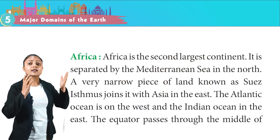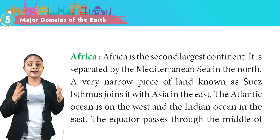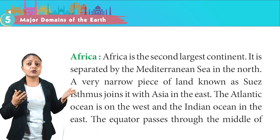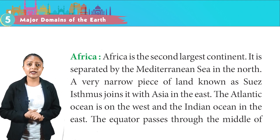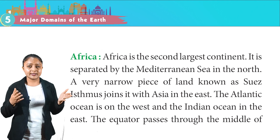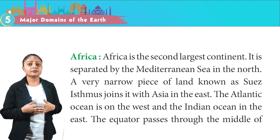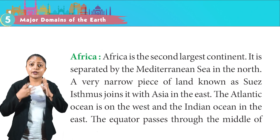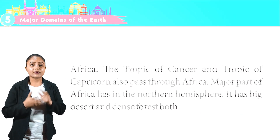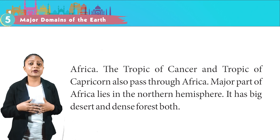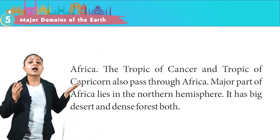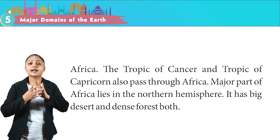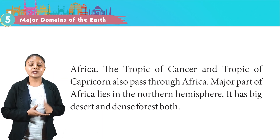Africa is the second largest continent. It is separated by the Mediterranean Sea in the north. A very narrow piece of land known as the Suez Isthmus joins it with Asia in the east. The Atlantic Ocean is on the west and the Indian Ocean is in the east. The equator passes through the middle of Africa. The Tropic of Cancer and Tropic of Capricorn also pass through Africa. The major part of Africa lies in the northern hemisphere. It has big deserts and dense forests both.